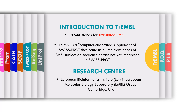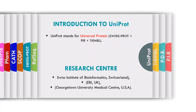Next is UniProt, which stands for Universal Protein. This database is a collection of three databases: SwissProt, PIR, and TrEMBL — these three together make up UniProt. UniProt is also a freely accessible database of protein sequences and functional information, with many entries derived directly from genome sequencing projects. Its research centers are the Swiss Institute of Bioinformatics in Switzerland, EBI in the UK, and Georgetown University Medical Center in the USA.